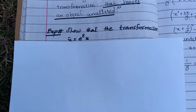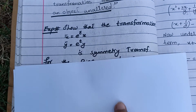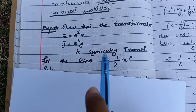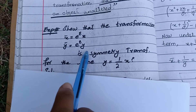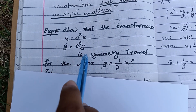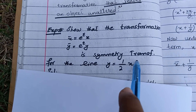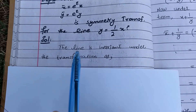Let us look at a particular example and see how this definition works. The question is: show that the given two transformations are symmetry transformations for the line. We have a line and we have to check that these transformations form a group. First of all, we have to check whether this line is invariant under these transformations or not.